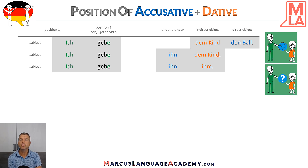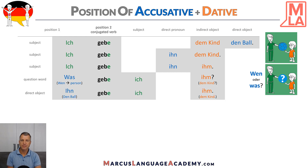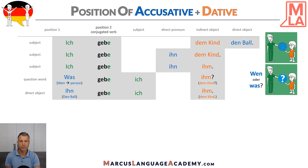So how do we ask for the direct object — the accusative? We ask 'wen oder was'. In our example we could ask: 'Was gebe ich ihm, also dem Kind?' That would be a question, and because the answer is important, I could also put the answer 'den Ball' or 'ihn' in first position: 'Ihn gebe ich ihm oder dem Kind.' Remember, the verb stays in the second position — that's a really important rule for the main sentence.